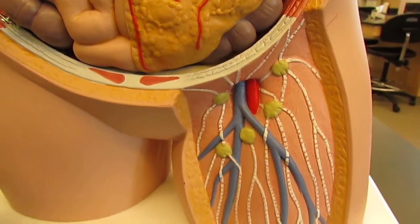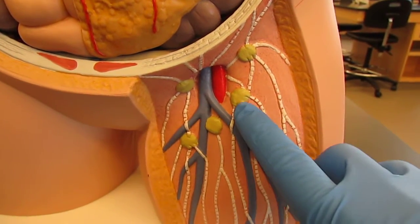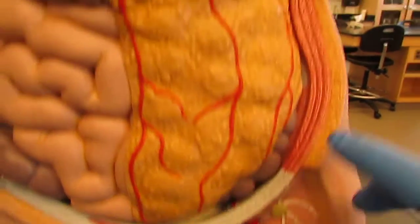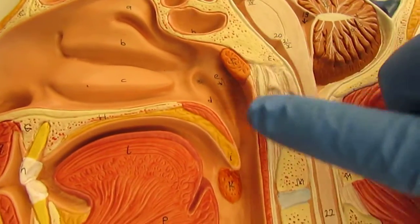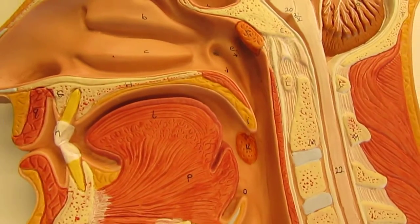Okay. So again, this is the lymphatic system. We have the lymphatic vessels in white. We have the lymph nodes in green. We have the spleen. And if we go back to this model right here, we have one, two, and three pairs of tonsils.